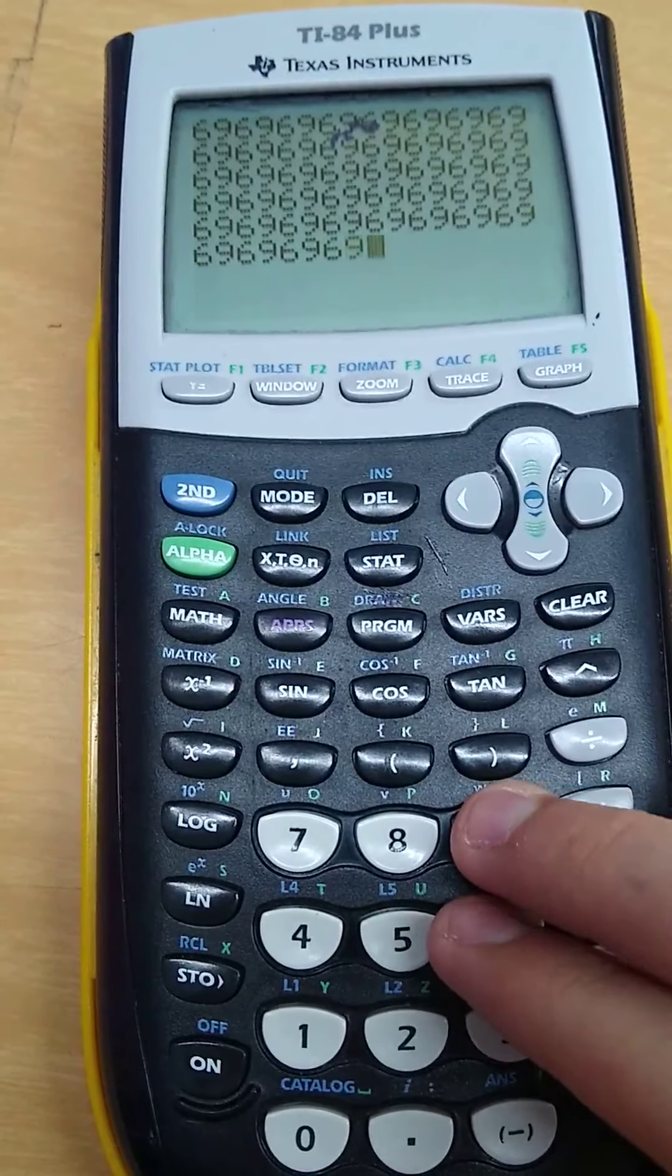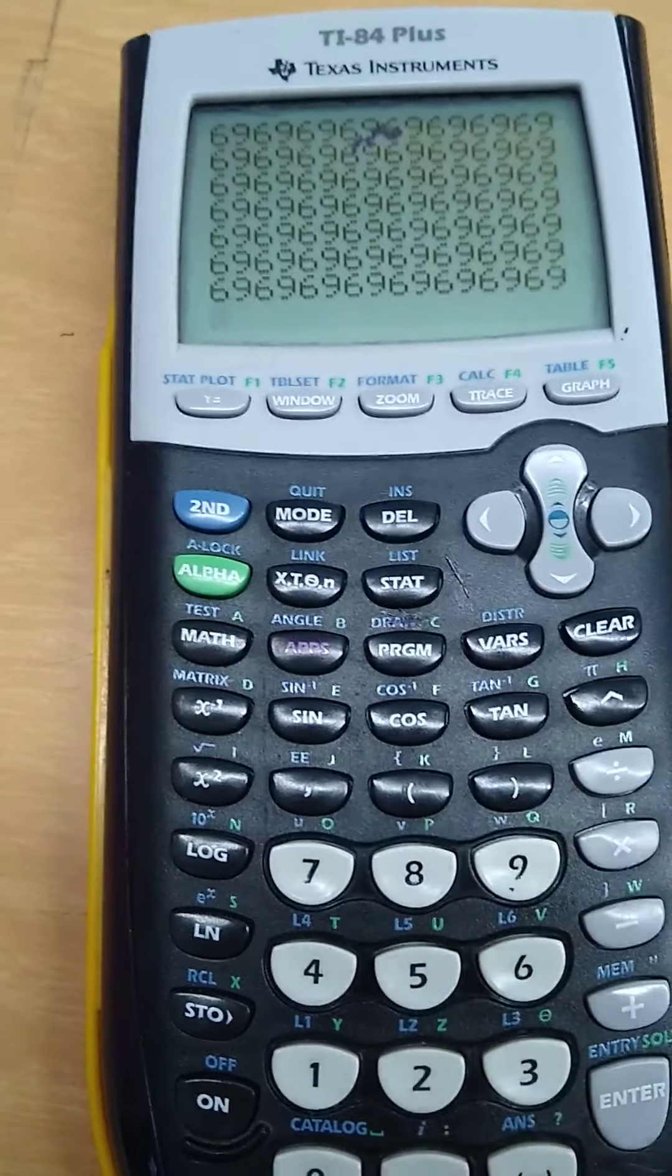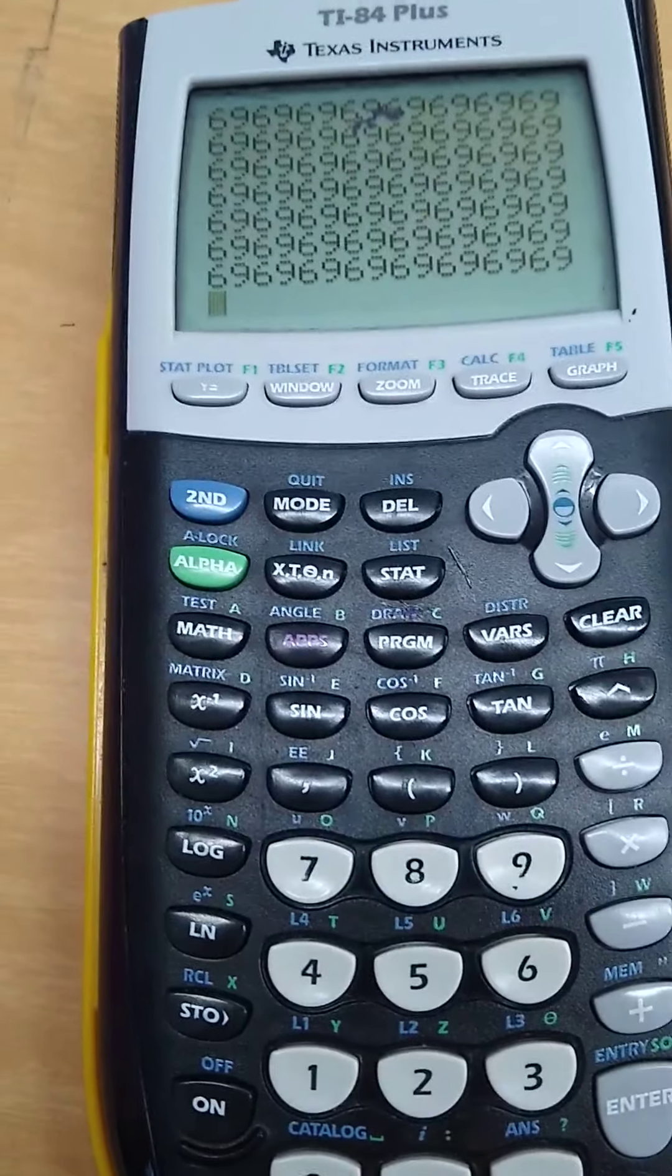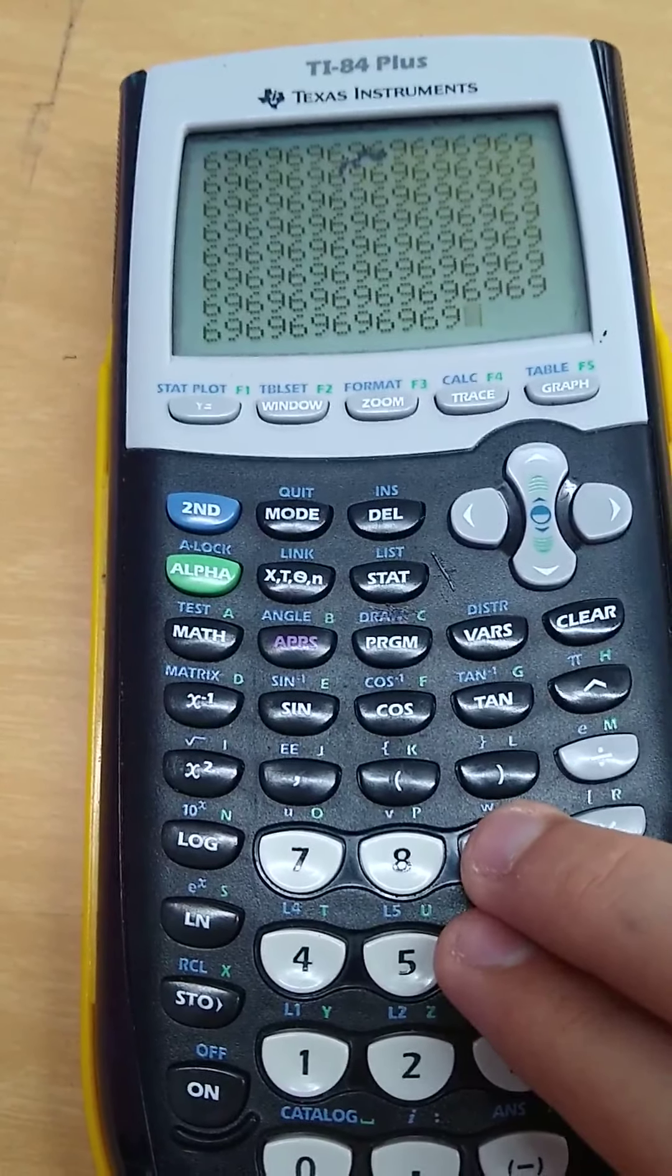Forty-seven, forty-eight, forty-nine, fifty, fifty-one, fifty-two, fifty-three, fifty-four, fifty-five, fifty-six, fifty-seven, fifty-eight.